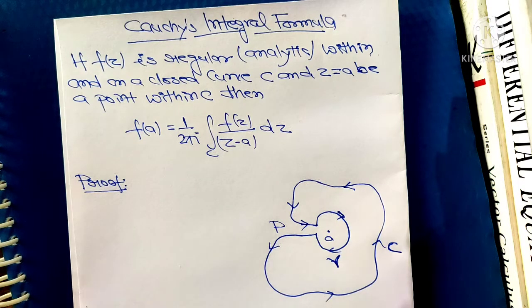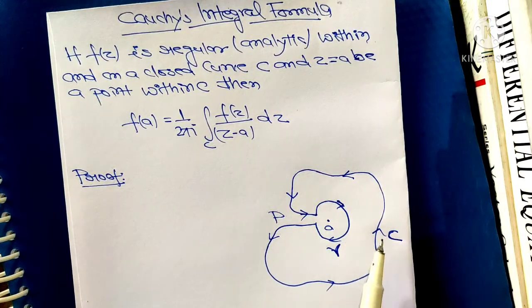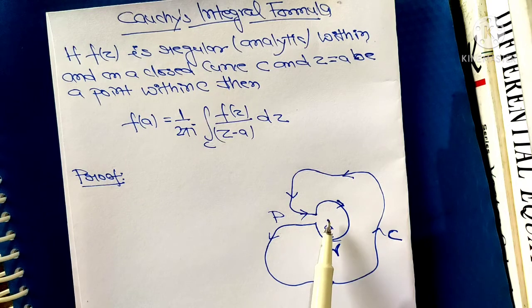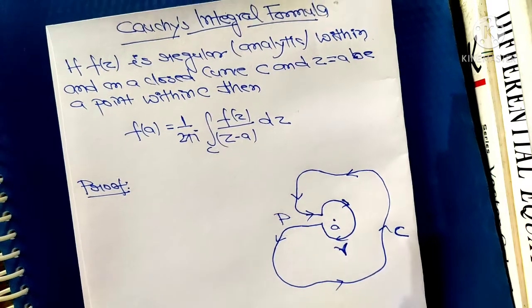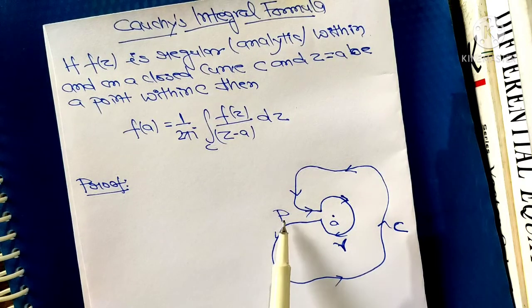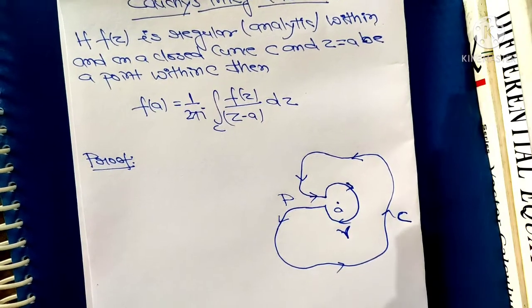Here I just made the closed curve C — as you see in the diagram, I made the closed curve C. Under the closed curve C, I made a small circle gamma with center a. And there is a part P; this part is called P. Let's start the proof without wasting any time.